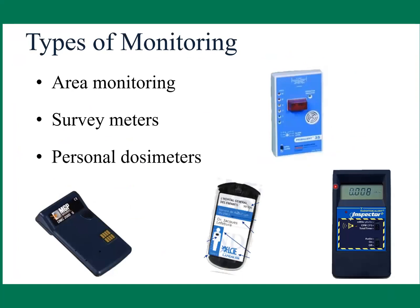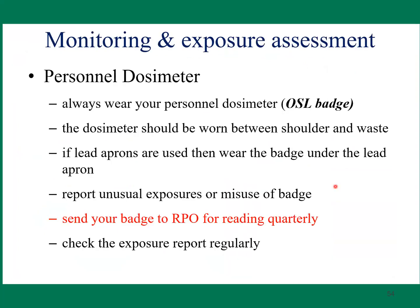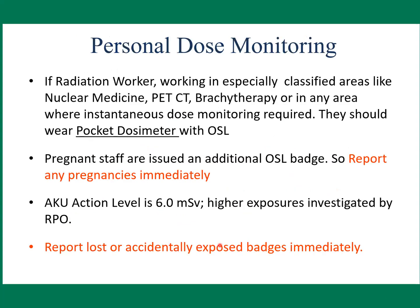Types of monitoring include area monitoring, thermoluminescent dosimeters (TLDs), personal radiometers, and personal dosimeters. Always wear your personal dosimeter — in our hospital we use OSL badges. The dosimeter should be worn between the shoulder and the waist. If a lead apron is used, wear the badge under the lead. Send your badge to the radiation protection officer for quarterly reading and check exposure reports regularly. Radiation workers in classified areas such as nuclear medicine, PET-CT, or brachytherapy should wear an electronic personal dosimeter (EPD). Pregnant staff are issued an additional abdominal badge and should report any pregnancy. Our investigation level is 6 mSv; high exposure is investigated by the radiation protection officer.